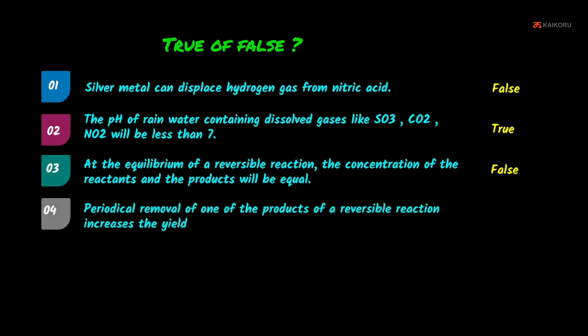Fourth: periodical removal of one of the products of a reversible reaction increases the yield. In a reversible reaction, if we periodically remove a product, the reaction speed increases and we get higher yield. This statement is True.